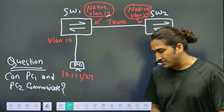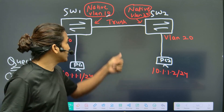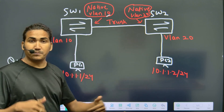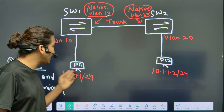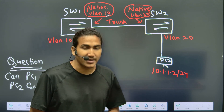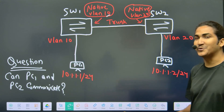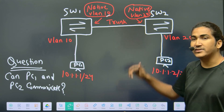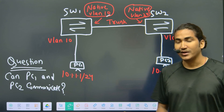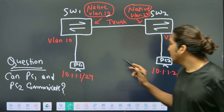99% of people will say no because of the native VLAN mismatch on the trunk link — native VLAN should match on both switches for communication to happen between VLAN 10 and VLAN 20. But I'm going to show you how PC1 and PC2 can ping each other even when the native VLANs are not the same. Let's check the packet flow.